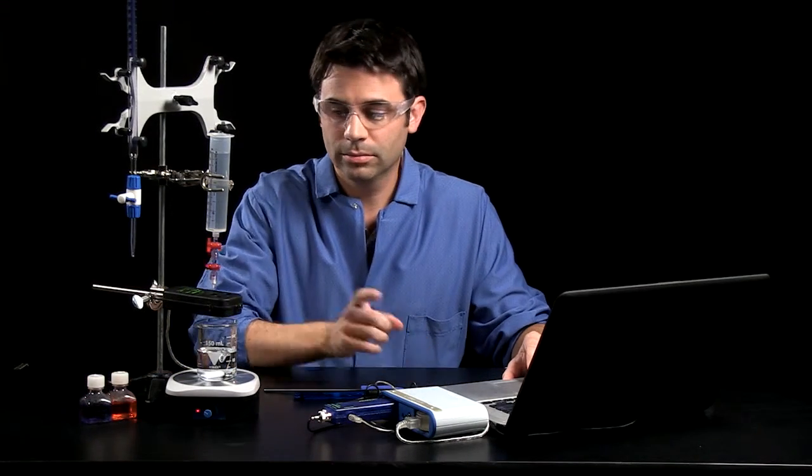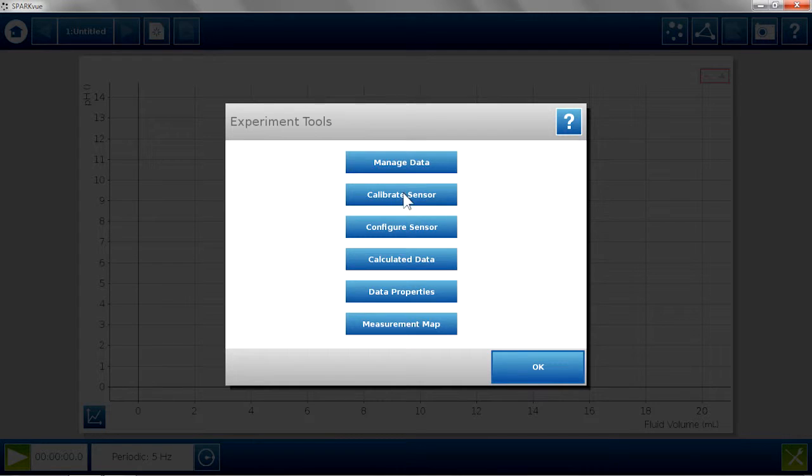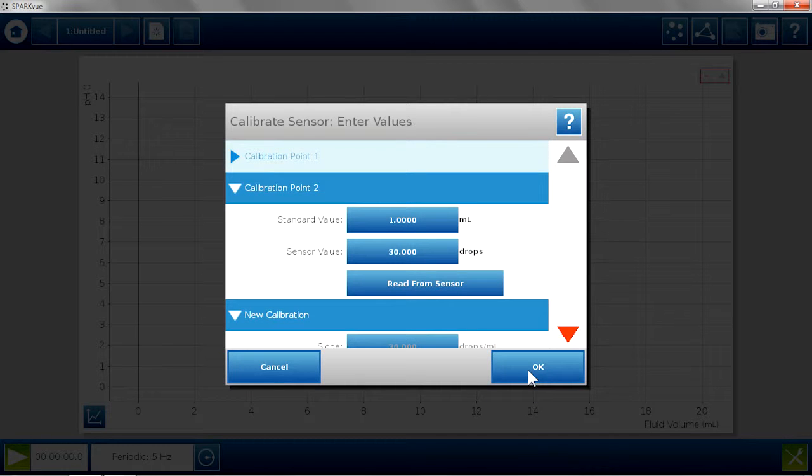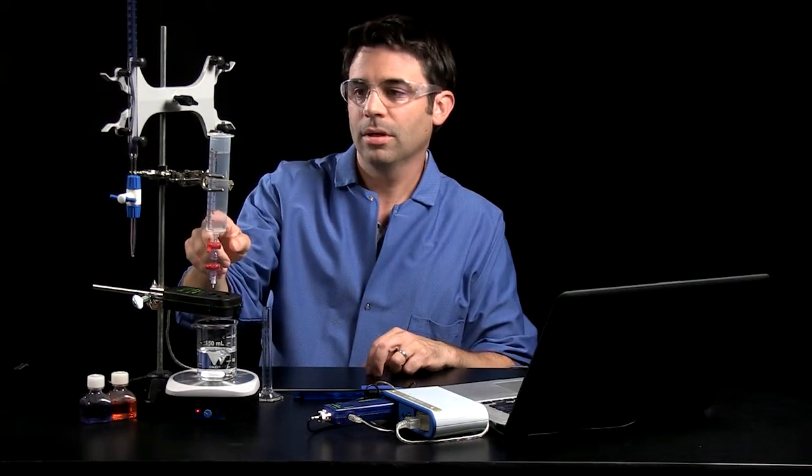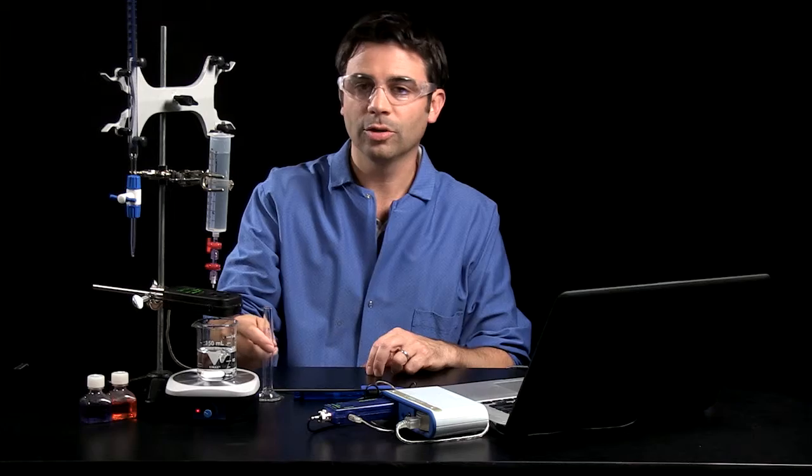And I need to calibrate my drop counter so that it knows what the fluid volume is. So I'm going to calibrate my drop counter, fluid volume. And the way to do this is you use a graduated cylinder and drop the titrant through the drop counter into the graduated cylinder until a certain volume that you want.